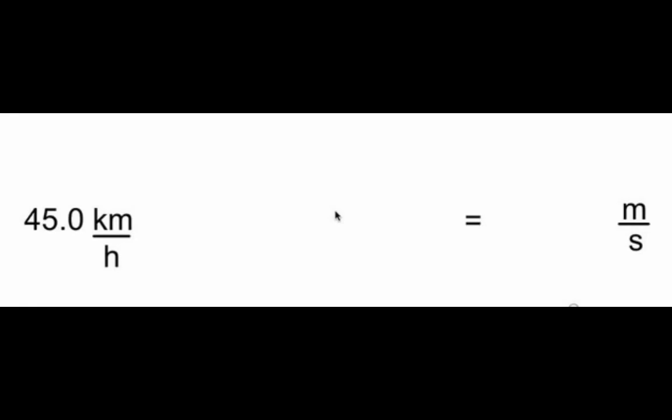When we're using our kinematic equations, we are not able to use kilometers per hour as a speed, so we can't have 45 kilometers per hour and plug it in. We have to have it in meters per second, so this is the way to convert it.